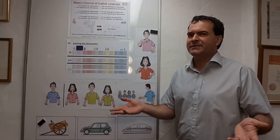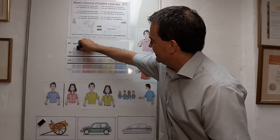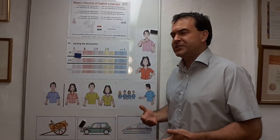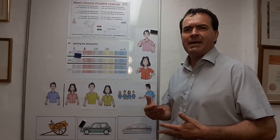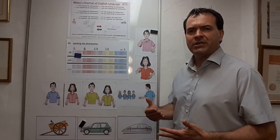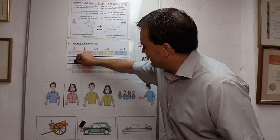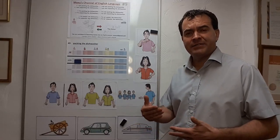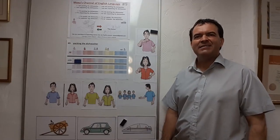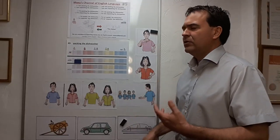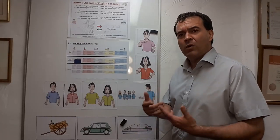Present tense: I am unpacking the dishwasher. I am not unpacking the dishwasher. I'm unpacking the dishwasher. I'm not unpacking the dishwasher. Future tense: I am going to be packing the dishwasher. I am not going to be packing the dishwasher. I'm going to be packing the dishwasher. I'm not going to be packing the dishwasher. I will pack the dishwasher. I will not pack the dishwasher. I'll pack the dishwasher. I won't pack the dishwasher.